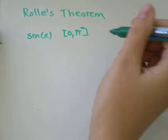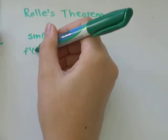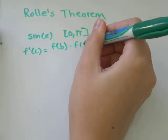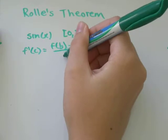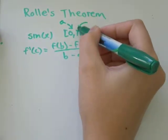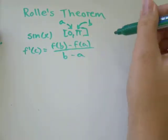So the first thing is, let's remember the formula, f prime of c equals f of b minus f of a over b minus a. In this example, a is equal to zero and b is equal to pi.